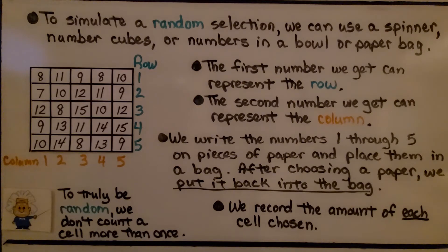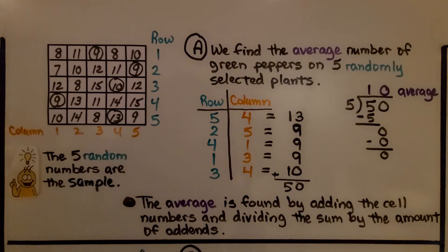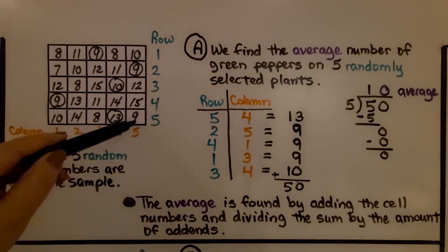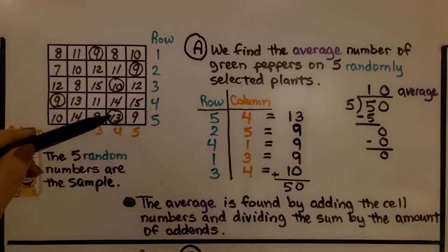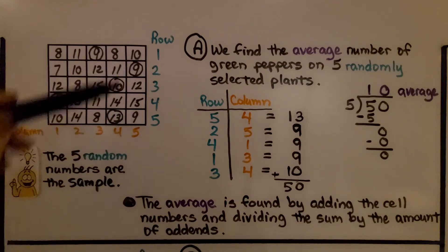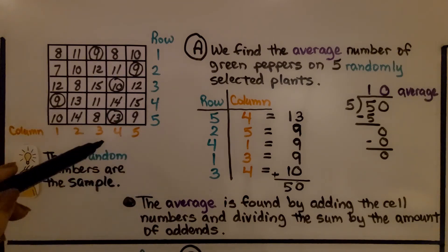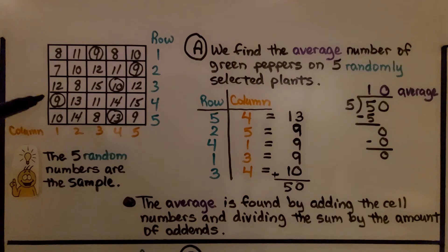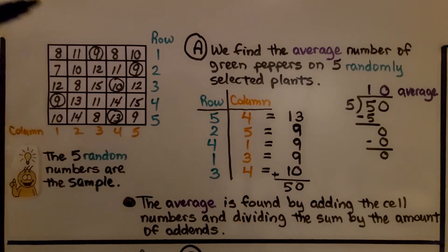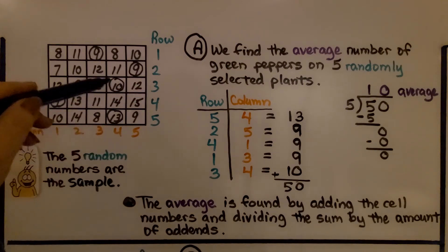To truly be random, we don't count a cell more than once. If you end up with the same cell, just pick again. So out of the bag I picked a 5 and a 4 — that got me a 13. I picked a 2 and a 5 — that got me a 9. I picked a 4 and a 1 — that got me another 9. I picked a 1 and a 3 — that got me another 9. And I picked a 3 and a 4 — that got me a 10.